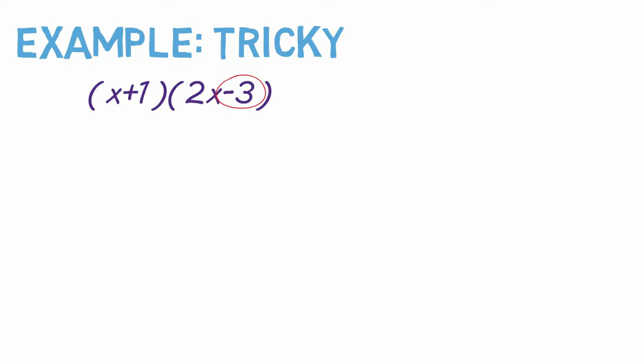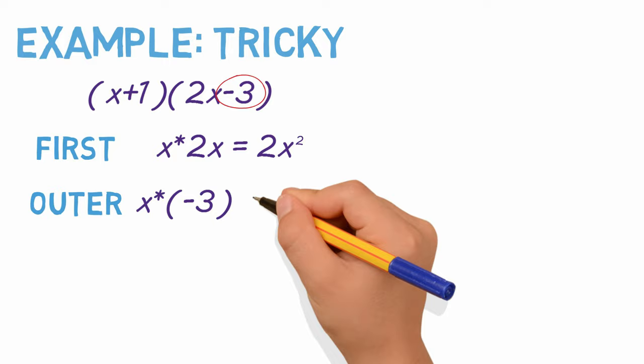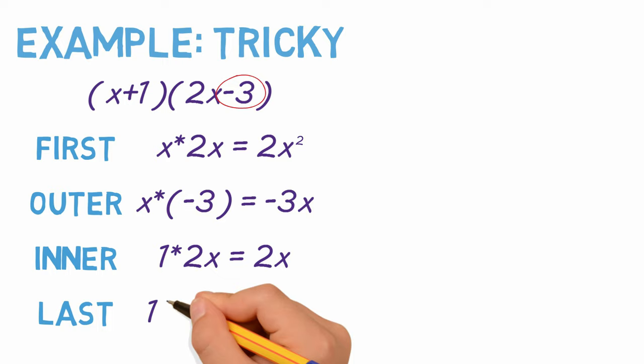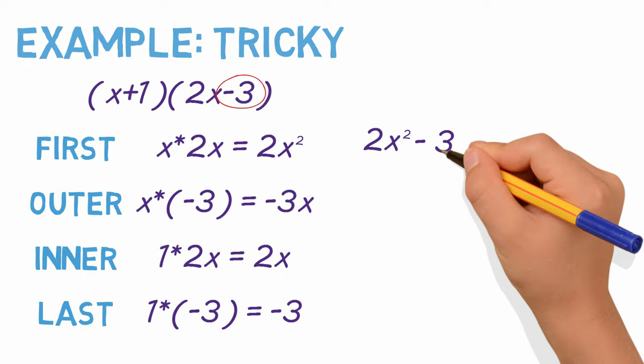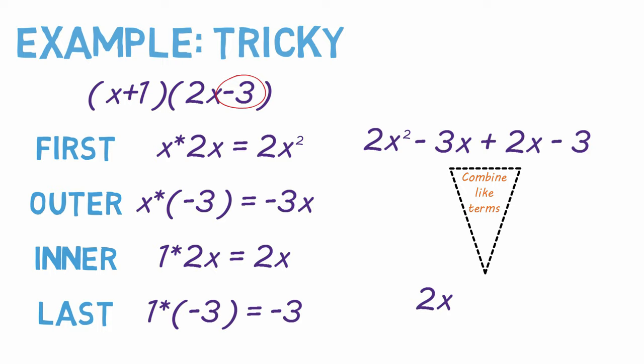So real quick. First. Outer. Inner. Last. Put them together and get 2x squared minus 3x plus 2x minus 3. And combine like terms to get 2x squared minus x minus 3.